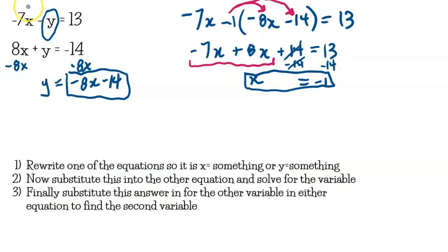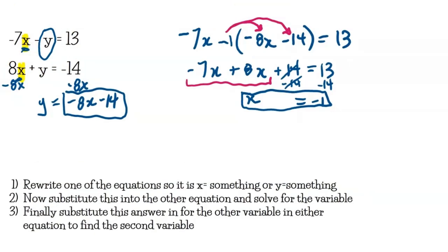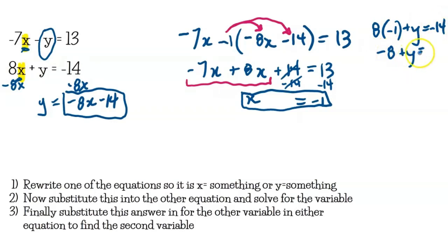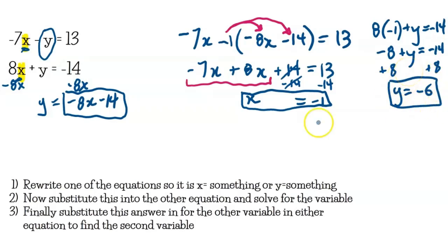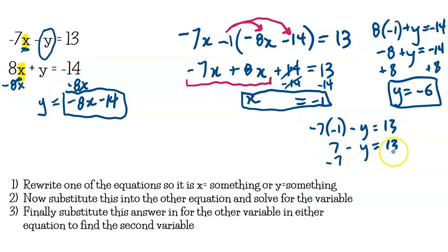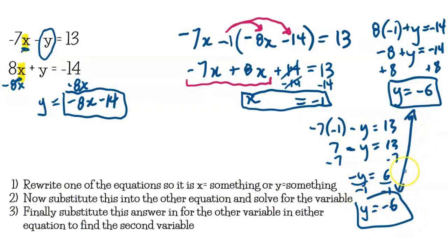Now substitute x = negative 1 into one of the original equations. Using the second: 8 times negative 1 plus y equals negative 14, so negative 8 plus y equals negative 14, giving y equals negative 6. Verifying with the first equation: negative 7 times negative 1 minus y equals 13, which gives y equals negative 6 as well. The solution is negative 1 comma negative 6.